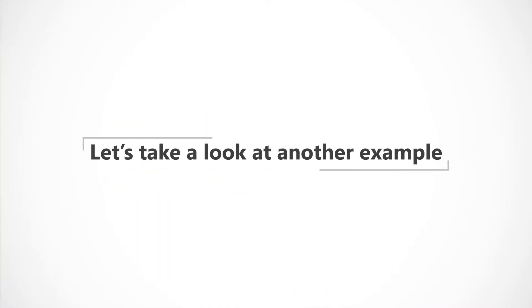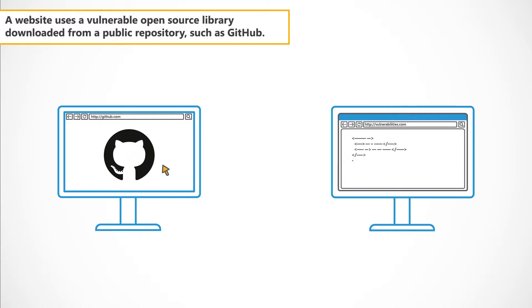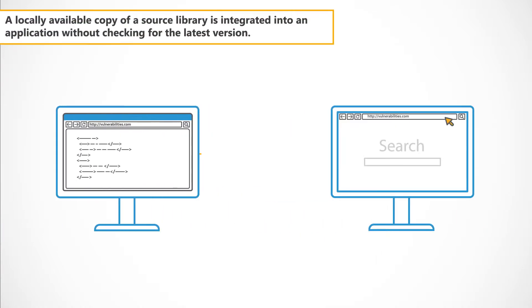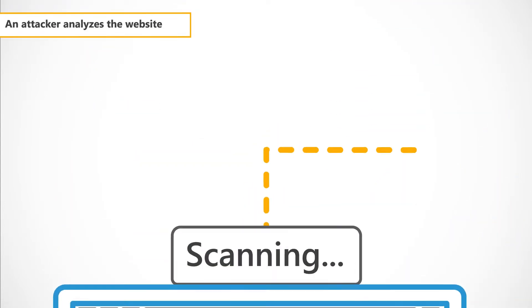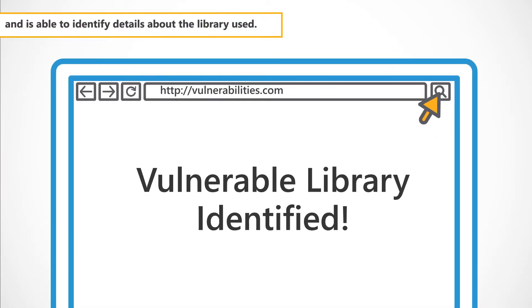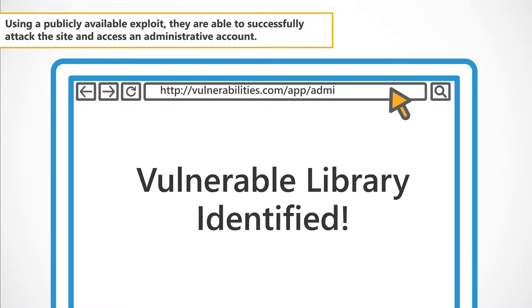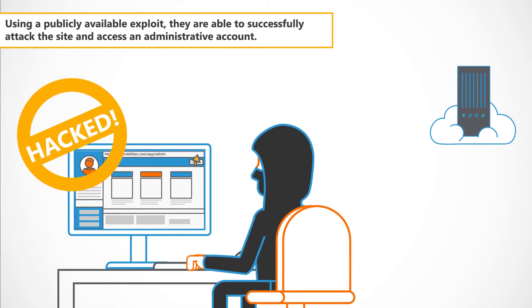Let's take a look at another example. In this case, a website uses a vulnerable open source library downloaded from a public repository such as GitHub. A locally available copy of a source library is integrated into an application without checking for the latest version. An attacker analyses the website and is able to identify details about the library used. Using a publicly available exploit, they are able to successfully attack the site and access an administrative account.